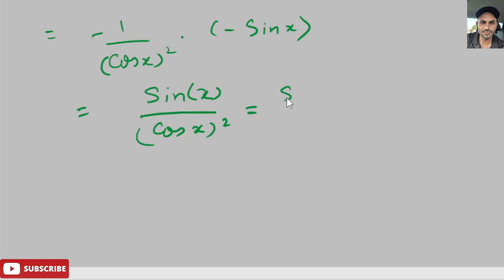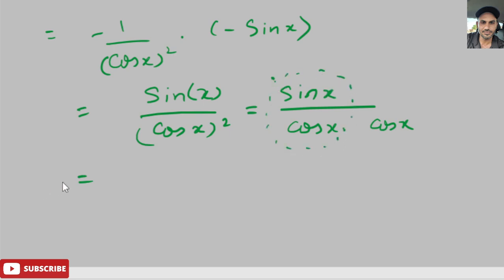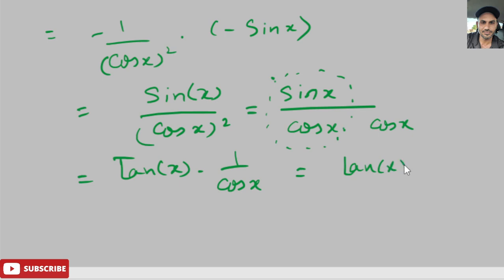We can write this as sine of x over cosine of x times 1 over cosine of x. This equals tangent of x times 1 over cosine of x. Since 1 over cosine of x equals secant of x, we get tangent of x times secant of x. So the derivative of secant of x is tan(x)·sec(x). Hopefully this helps!